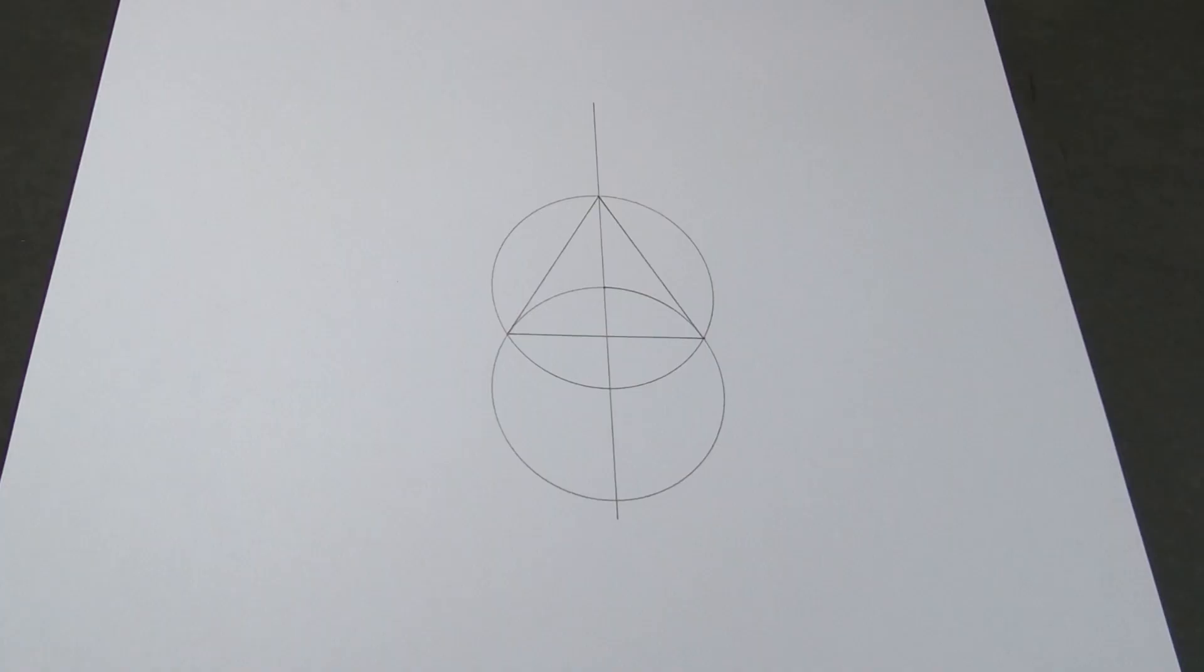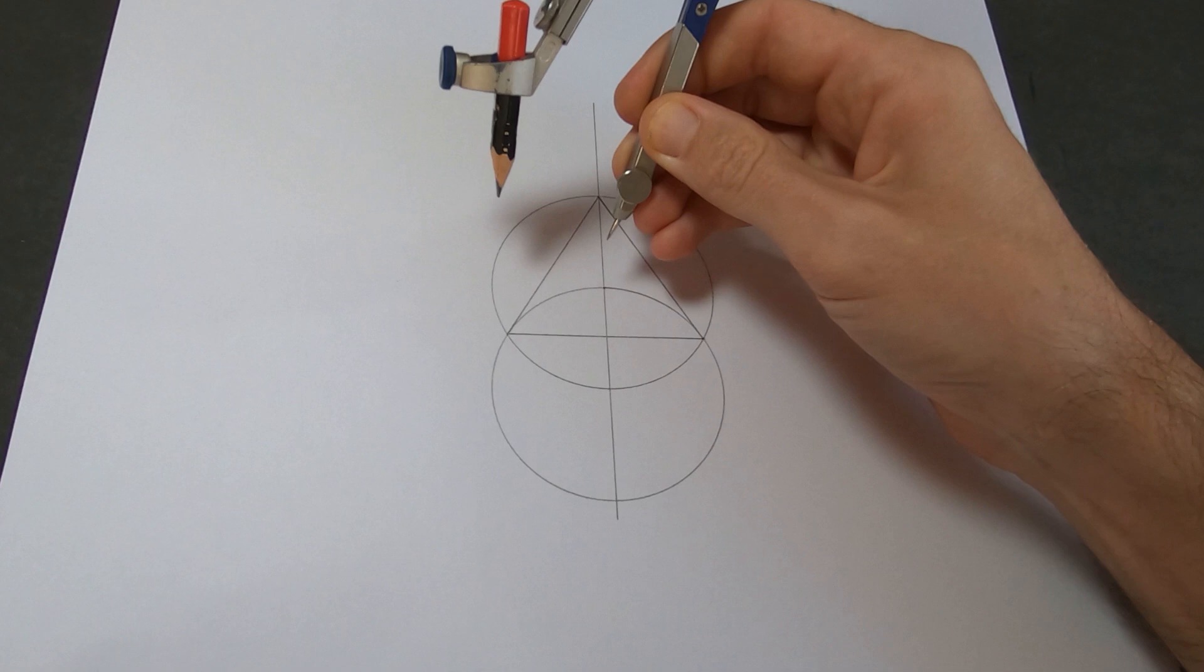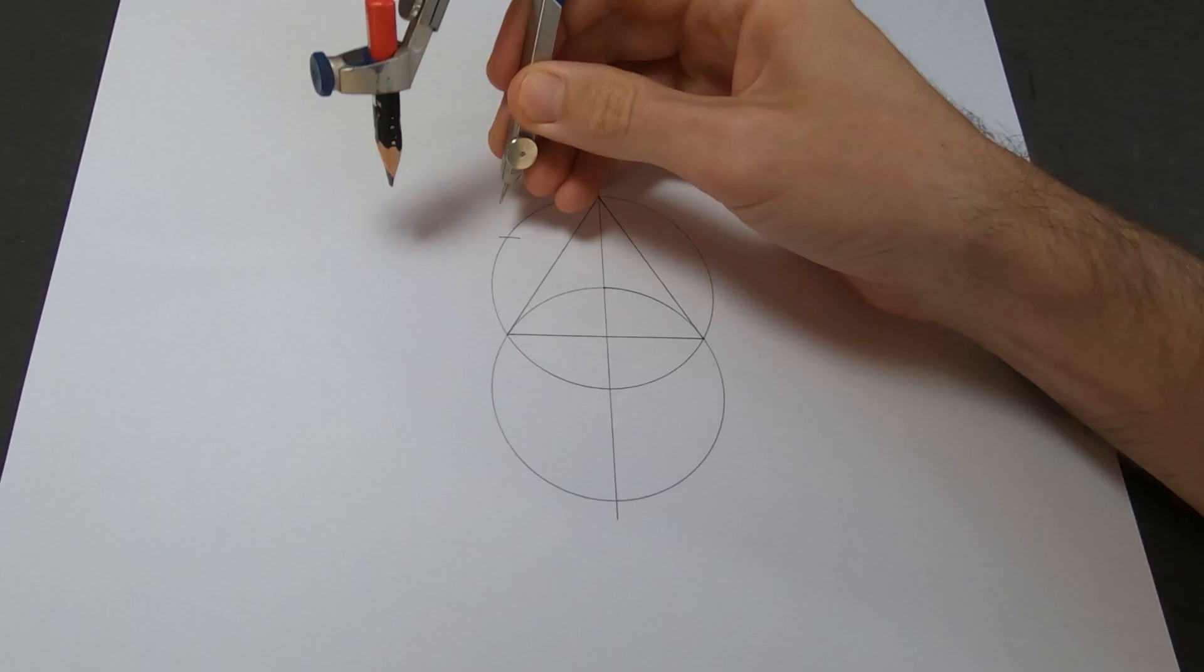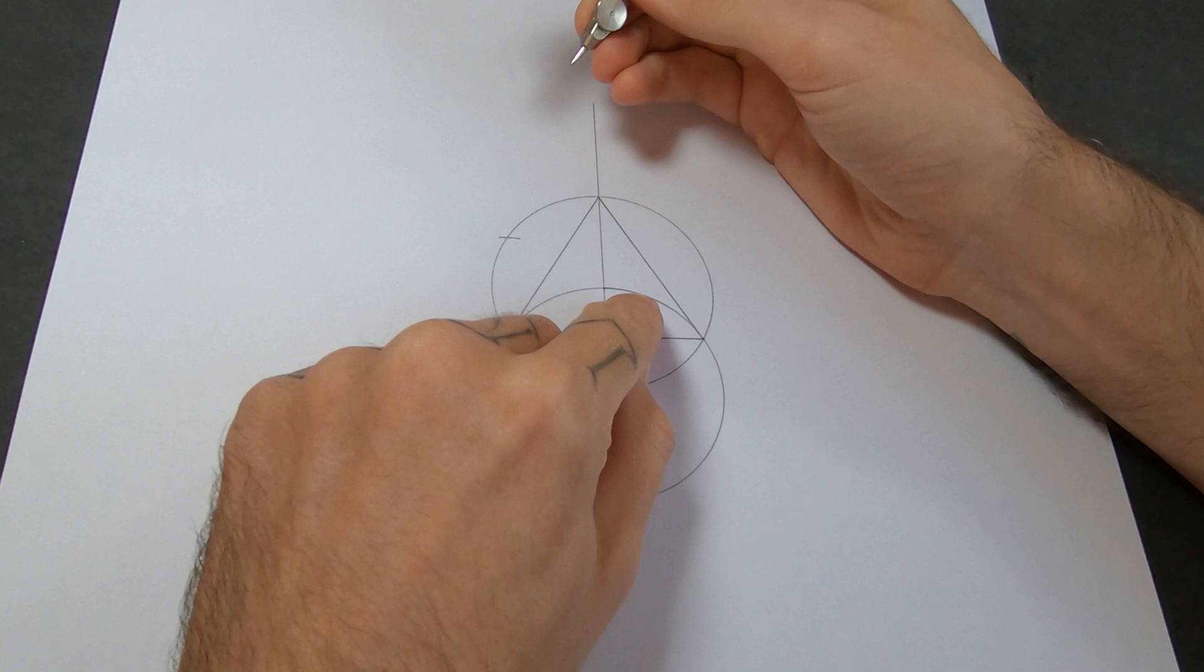So I'll keep my compass set at the same size as the other two circles, and I'll just put it on this intersection here and go up a little bit and put a little mark that crosses the main circle. Now I'm going to find the horizontal line which will be 90 degrees from the center point.